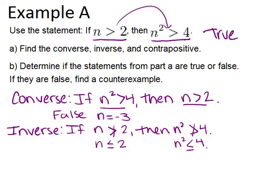Let's think about whether the inverse is true. We're thrown off by negative numbers again. If we consider n equals negative 3: negative 3 is less than or equal to 2, so the hypothesis is satisfied. But negative 3 squared is 9, which is not less than or equal to 4. So n equals negative 3 is a counterexample to this statement, making the inverse false.